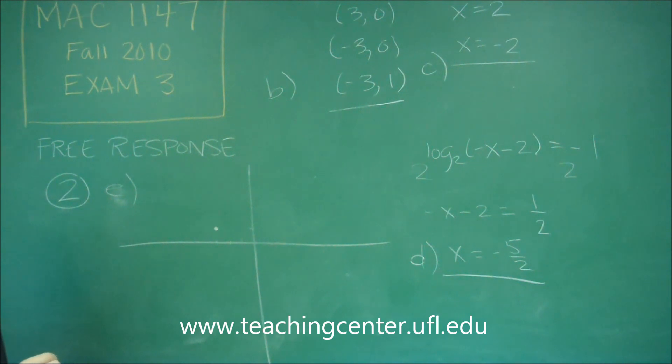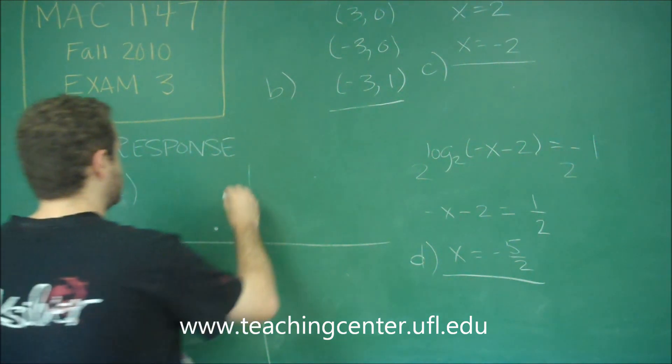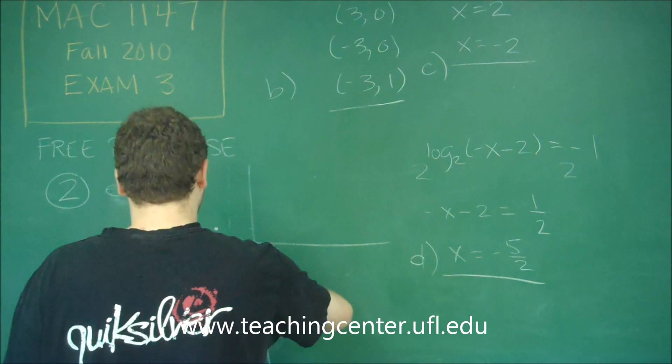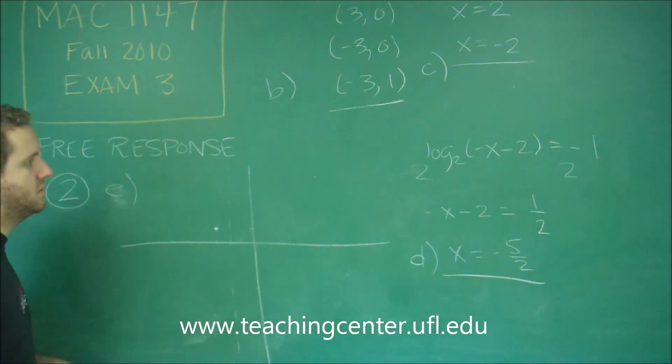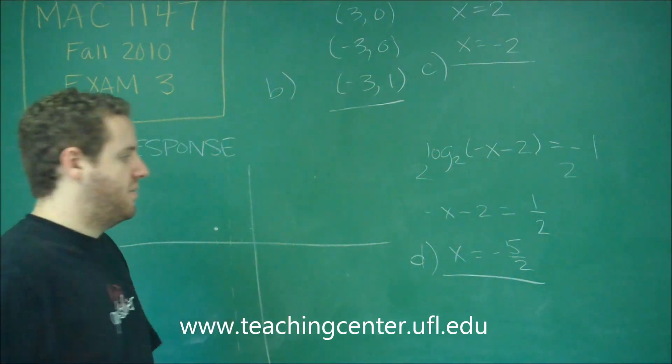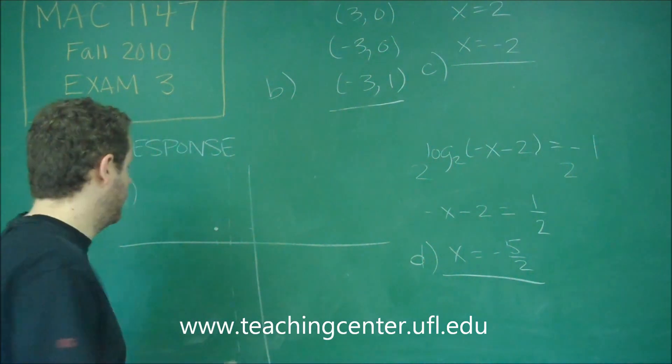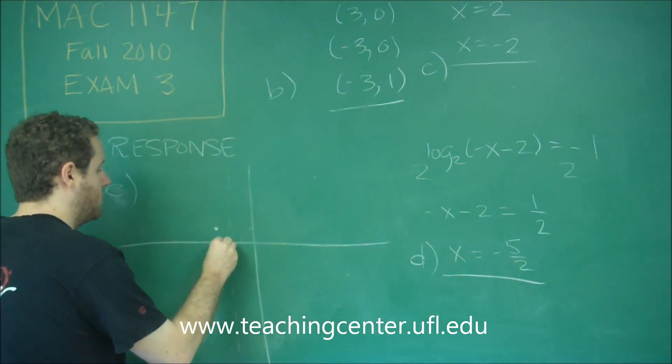We know that x equals negative 2 is a vertical asymptote. So we have a vertical asymptote right through there. We know that x equals negative 5 halves which is negative 2 and a half is where we cross 0 which is right there.